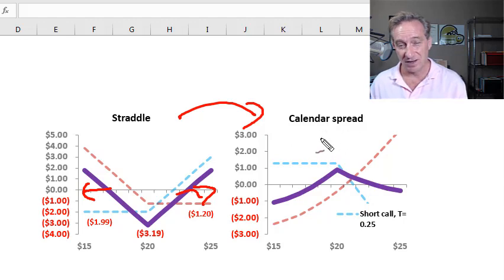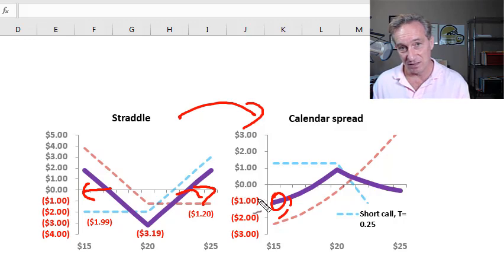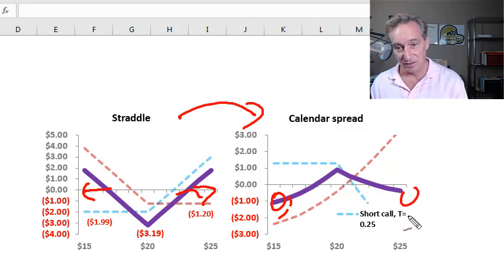So we can call this calendar straddle a neutral strategy, or I think you can call it a range bound strategy. It's going to profit here if there's no movement, and it's going to lose if there's either a drop or an increase in the stock price.